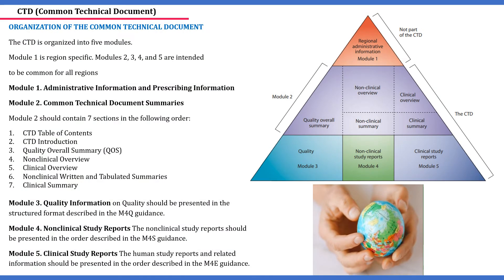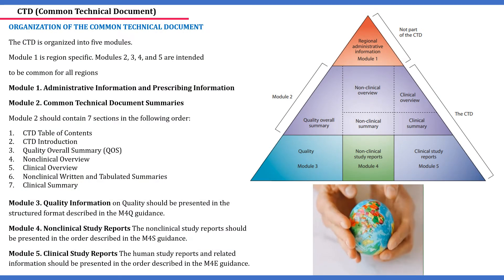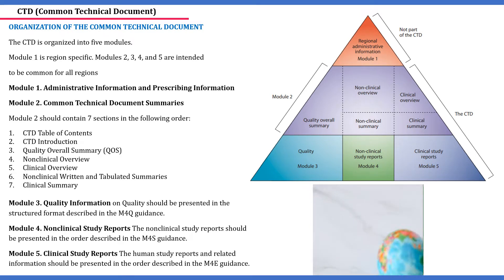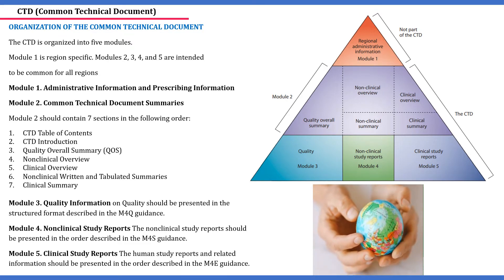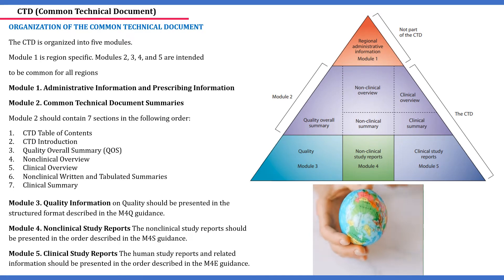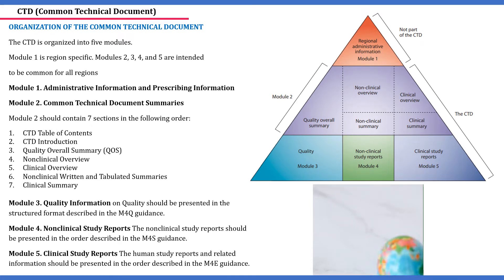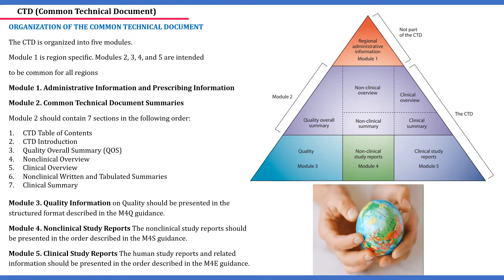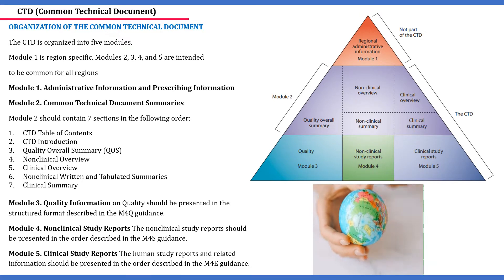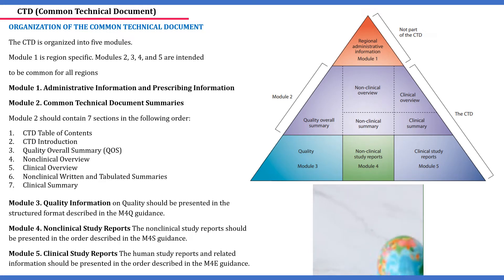In 2003, the members of the ICH agreed to assemble all quality, safety, and efficacy information in a common format called the CTD. The CTD is the standard format or structure for most global medical applications. When planning to submit a drug application to a health authority, the application should contain 5 important components — called modules of CTD. Module 1 is the administrative information and prescribing information, containing documents like cover letters and application forms. This module varies country to country.